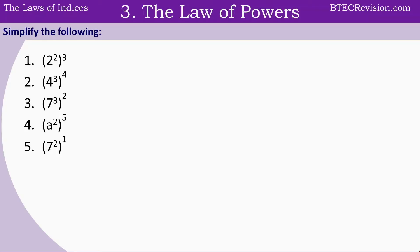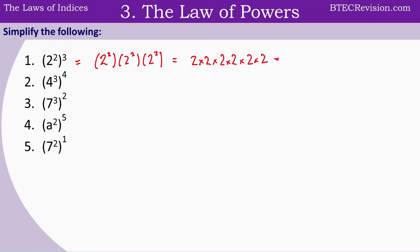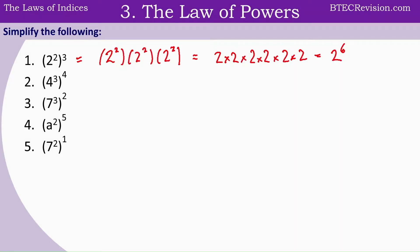Now let's move on to the third law. For question 1 we have 2 to the power of 2, multiplied by 2 to the power of 2, multiplied by 2 to the power of 2. Simplifying further, we have 2 times 2 times 2 times 2 times 2 times 2 — so there are six 2's — giving us 2 to the power of 6. This brings us to the law of powers: a to the power of m, to the power of n, is simplified to a to the power of m times n.